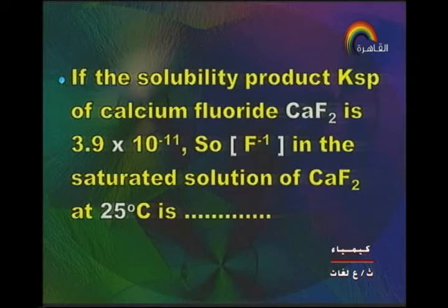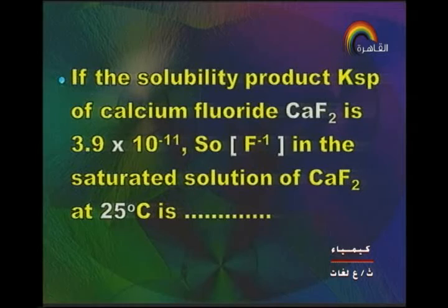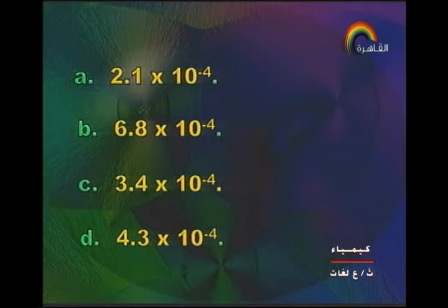If the solubility product Ksp of calcium fluoride CaF₂ is 3.9×10⁻¹¹, the concentration of F⁻ ion in the saturated solution of CaF₂ at 25°C is what — 2.1×10⁻⁴ or 6.8×10⁻⁴? If you solve it, the answer will be 2.1×10⁻⁴.